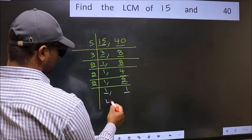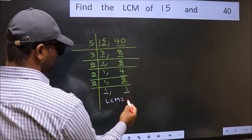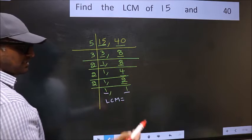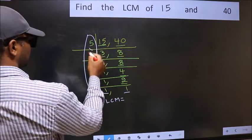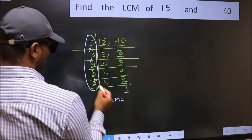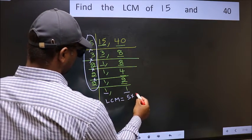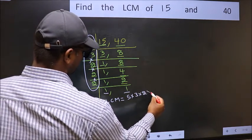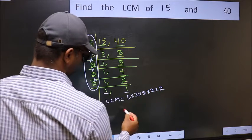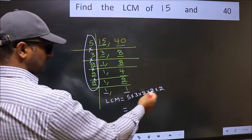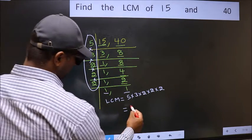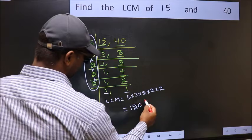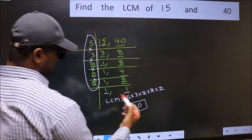So our LCM is the product of these numbers. That is 5 into 3, 2 into 2, 2 into 2. When we multiply these numbers, we get 120 as our LCM.